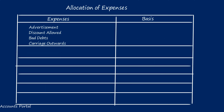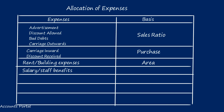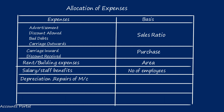Let's look at common business expenses — please use common sense rather than memorizing. Advertisement, discount allowed, bad debts, and carriage outward are related to sales and are charged to departments based on their sales ratio. Carriage inward and discount received are related to purchases and are charged based on the purchase ratio. Rent and building expenses are charged according to floor area occupied by each department. Salary and employee benefits such as provident fund and ESI are charged based on the number of employees.